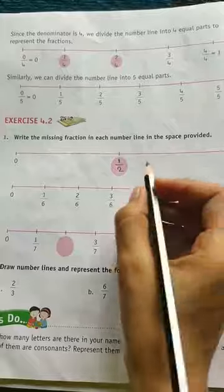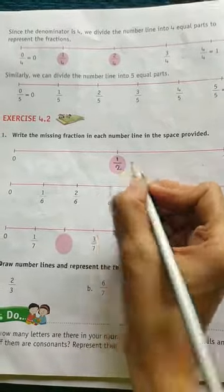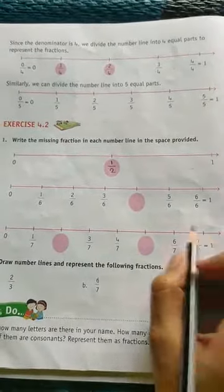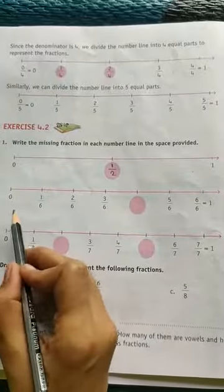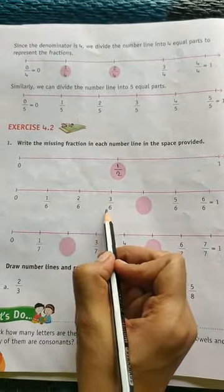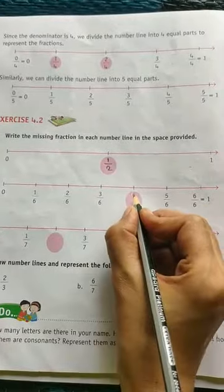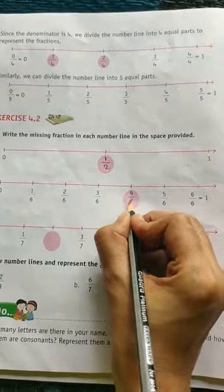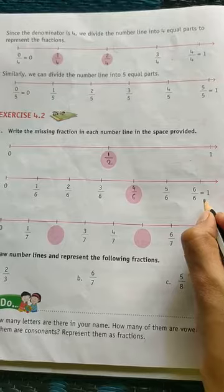Next, in the second number line: 0, 1 upon 6, 2 upon 6, 3 upon 6. After that, after 3, comes 4 upon 6, then 5 upon 6, then 6 upon 6, which means 6 upon 6 equals 1.